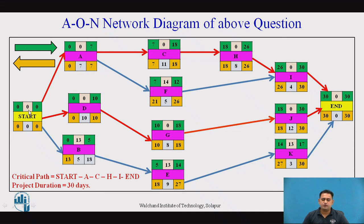The critical path is Start–A–C–H–I–End with a duration of 30 days. A second critical path exists: Start–D–G–J–End. Out of these two, the first path — Start, A, C, H, I, and End — is selected as it has the maximum number of critical activities, with a project duration of 30 days. This is the overall AON network diagram for the given question.